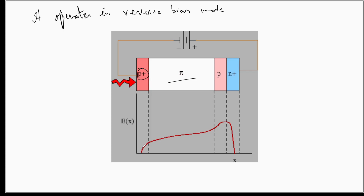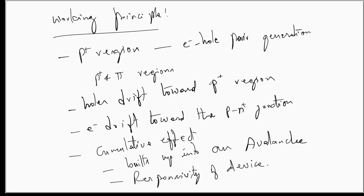The reverse bias condition gives rise to a large number of immobile ions, resulting in an electric field whose intensity increases slowly, reaches a maximum at the p n-plus junction, and drops down to zero. When light falls on the p-plus material, it enters the pi region where an electron-hole pair is generated. The hole drifts towards the p-plus material, and the electron moves towards the p n-plus junction due to the electric field. Since the electric field intensity is large, electrons are accelerated and interact with neutral atoms, ionizing them. This ionization process is cumulative and builds up into an avalanche, resulting in carrier multiplication and very high responsivity for the device.